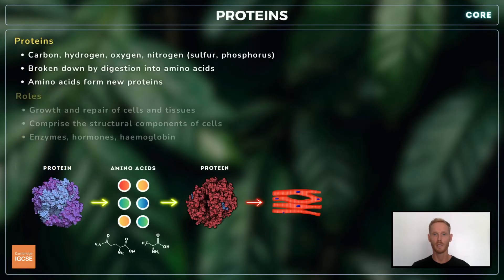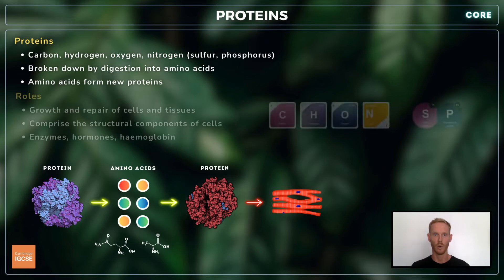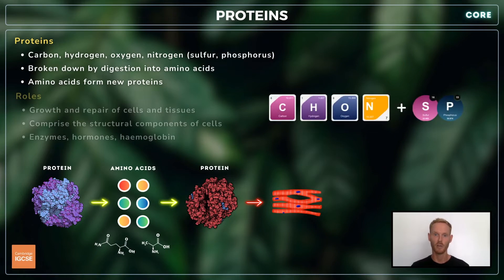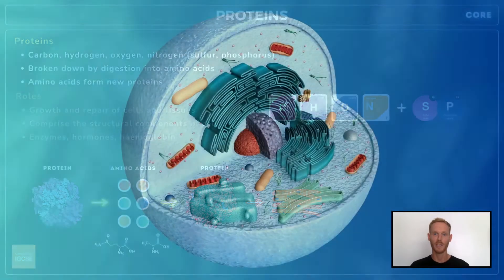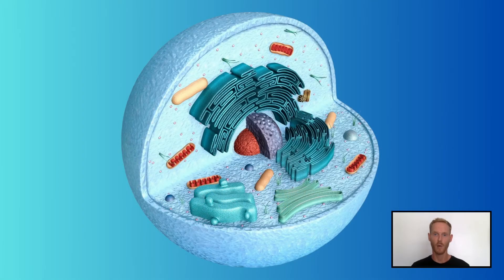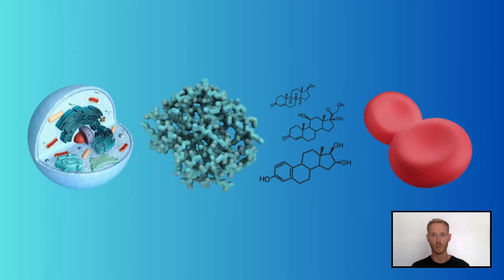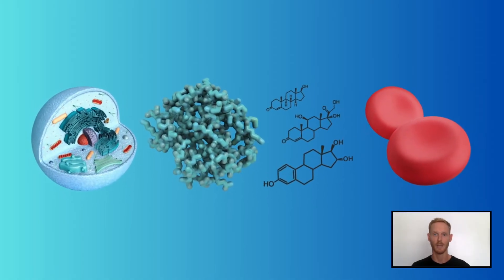Proteins are broken down by digestion into smaller molecules called amino acids, which are subsequently used to build proteins and tissues, including those of the skin, muscle, blood, and bones. All amino acids are made of carbon, hydrogen, oxygen, and nitrogen, and some contain sulfur and phosphorus as well. Proteins form the major structural components of all cells, including cell membranes, mitochondria, ribosomes, and chromosomes, as well as molecules like enzymes, hormones, and hemoglobin.